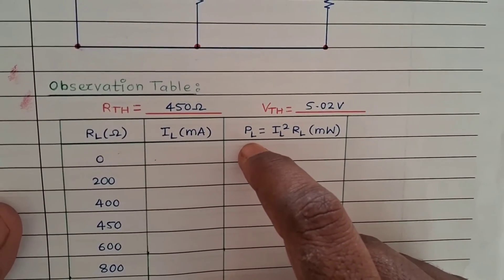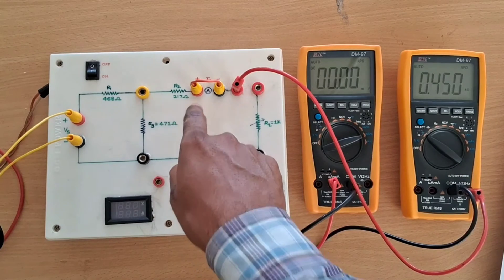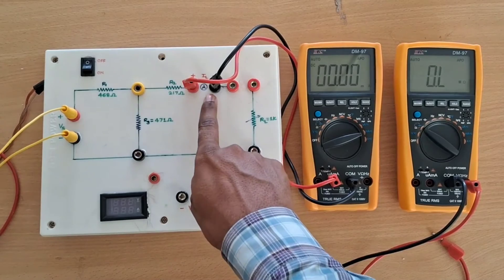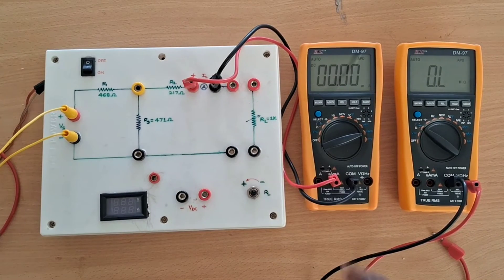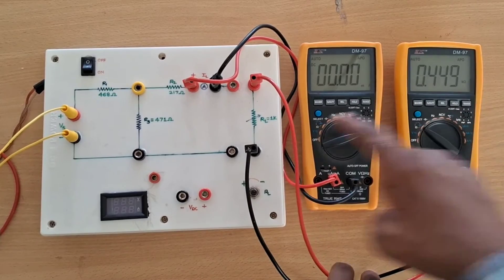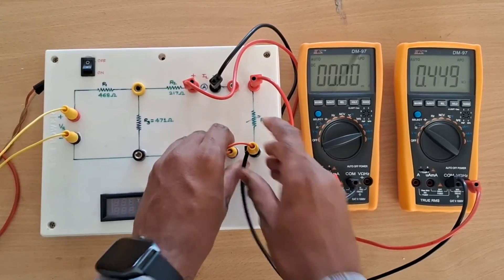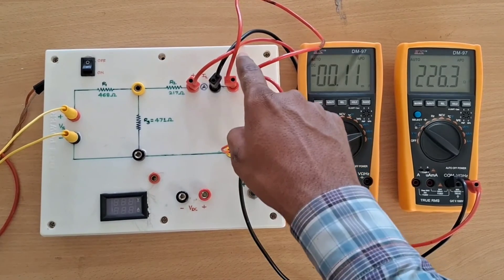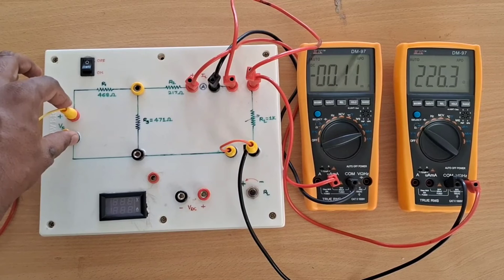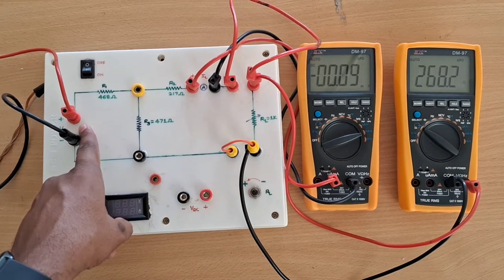To measure load current IL, I connect the ammeter between the two points. I also connect the ohmmeter between the load terminals to read RL each time, and connect the load resistance to the main circuit. Now I connect the power supply of 10 volts and we are ready to start the experiment.